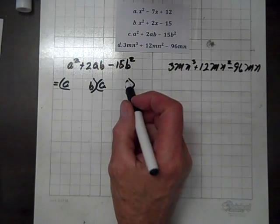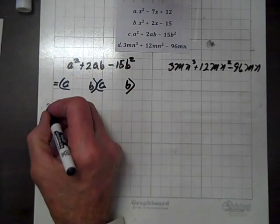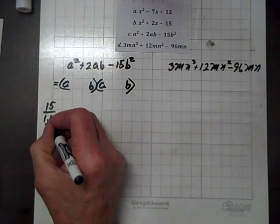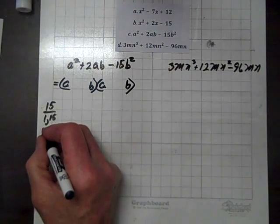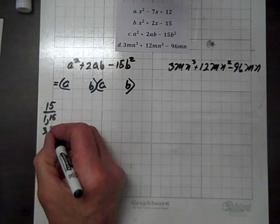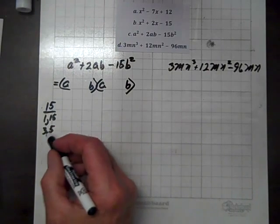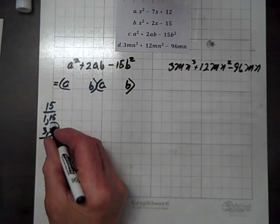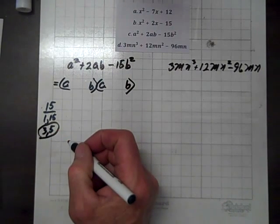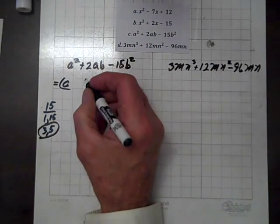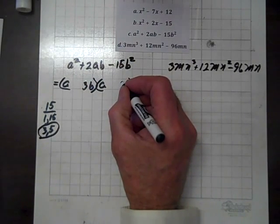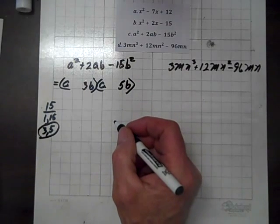So now we have to deal with the 15, and the factors of 15 are 1 and 15, and 3 and 5. And the factors of 15, 3 and 5, have a difference of 2. So we'll assign a 3 and a 5, respectively.